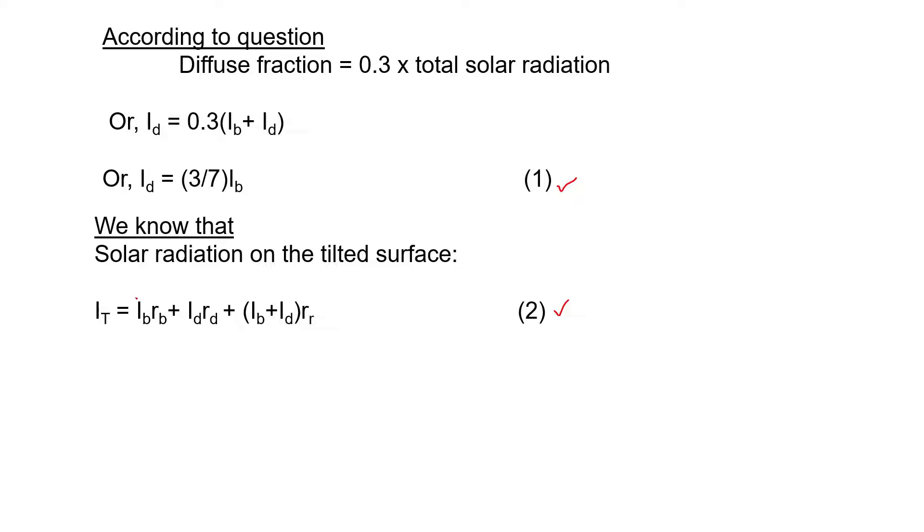Ib is the beam radiation, Rb is the tilt factor of the beam radiation, Id is the diffuse radiation, Rd is the tilt factor of the diffuse radiation. Ib plus Id represents the total solar radiation, and Rr represents the tilt factor of the reflected radiation.